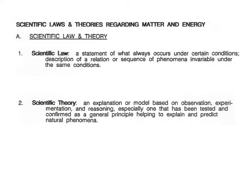This unit we're going to talk about the chemical laws and theories that are related to matter and energy because that is the focus of chemistry in this unit. So we're going to start with scientific law versus scientific theory. A scientific law is a statement of what always occurs under certain conditions. It is a description of a relationship or a sequence of phenomena that is invariable under the same conditions. While the scientific theory is an explanation or a model based on observation, experimentation, and reasoning, especially one that has been tested and confirmed as a general principle helping to explain and predict natural phenomena.